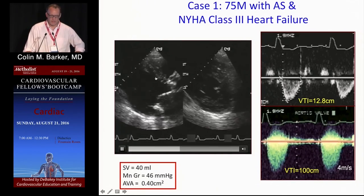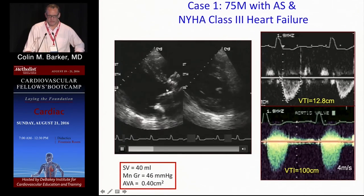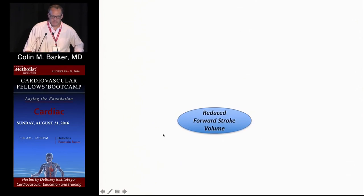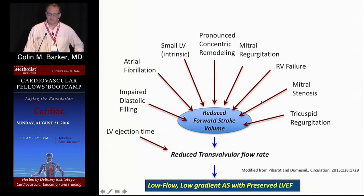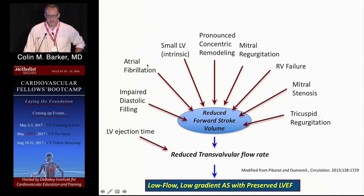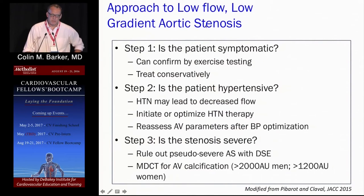An example: a patient with low flow but reduced EF and severe high gradient — mean gradient 46 mmHg — would do well with surgery. The challenge is the paradoxical low-flow low-gradient patients, because there's a whole spectrum of etiologies: hypertension, atrial fibrillation, MR, RV failure, mitral stenosis, TR. All of these lead to reduced stroke volume and reduced transvalvular flow rate and ejection time, which can make it appear to be severe AS when in fact you just need to treat something else. So how do we approach these patients? Check if they're symptomatic and consider a stress test — these are very low-risk and usually treated conservatively, particularly if mean gradient is less than 25 mmHg.